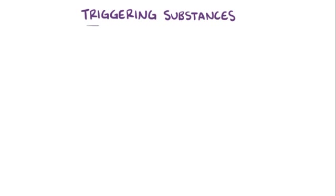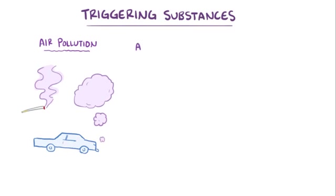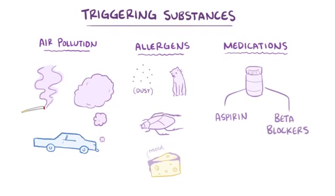Now, the triggering substance that leads to an asthma attack can differ from person to person, but some common ones include air pollution like cigarette smoke and car exhaust, as well as allergens like dust, pet dander, cockroaches, and mold. Medications like aspirin and beta blockers have also been known to trigger symptoms in some individuals with asthma.